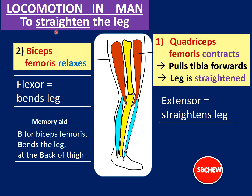To straighten the leg, the opposite action occurs — quadriceps femoris contracts while biceps femoris relaxes. When quadriceps femoris contracts, it pulls the tibia forward, straightening the leg. Therefore, quadriceps femoris is called an extensor — a muscle that straightens the limb. Biceps femoris is called the flexor because it bends the leg backwards when it contracts. You also need to know these two terms: flexor and extensor.